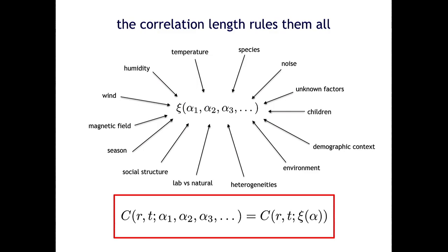This is a flock of starlings. Those are the velocity fluctuations in the flock, and you can clearly see that there are some correlated regions. The correlation length is the size of those regions — it's the most important length scale of the system. Of course it will depend on thousands of unknown parameters. It certainly depends on temperature, pressure, wind, children, species, group demographics, and so on. However, the key idea of scaling is that the correlation length absorbs all that dependence into itself.